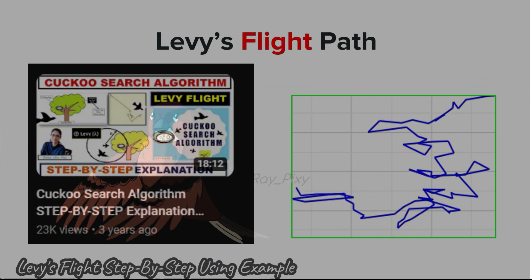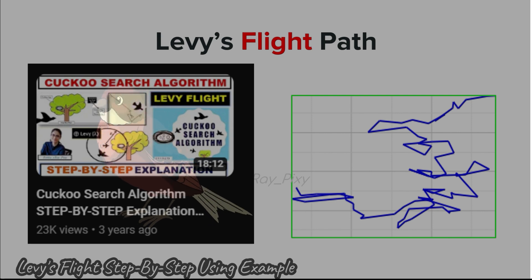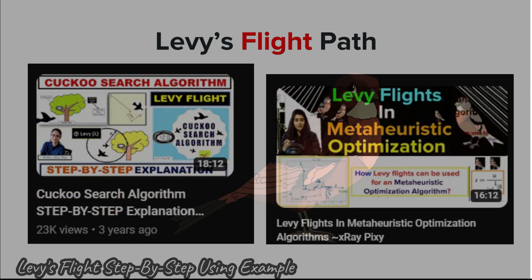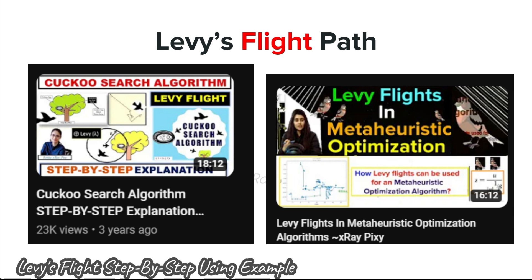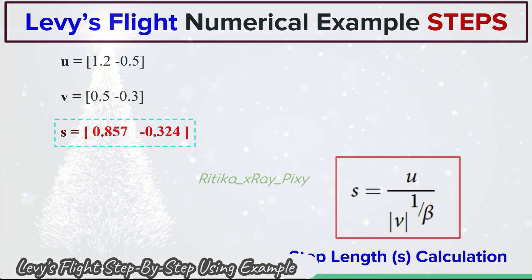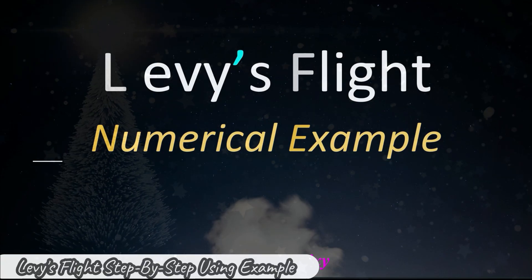Lévy's flight also helps avoid the search getting trapped in local optima because the long jumps can take the solution out of local optima, making it easier to find the optimal solution. We already discussed Lévy's flight and its use in cuckoo search in previous videos. In this video we will understand how each step in Lévy's flight is calculated using a simple numerical example.